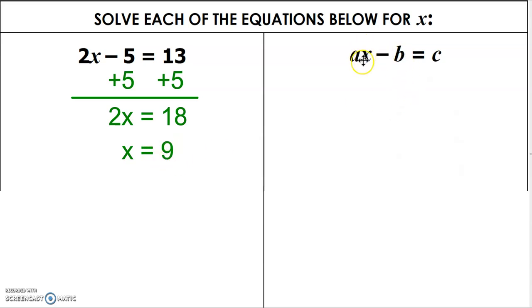But what about here? If we want to solve for x, what do we have to do? Well, we have to get rid of the b first by adding b to both sides. When we add b to both sides, we are left with ax on the left. And b and c aren't like terms, so we just write them down: c plus b.